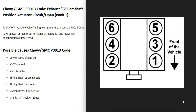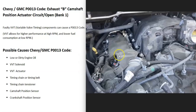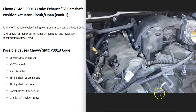If you have a V6 or V8 engine, you need to find bank one. Bank one is always the side of the engine with the number one cylinder. The opposite side is bank two. A V6 or V8 engine will have four solenoids — two on each side — and you just find bank one. The exhaust solenoid is going to be the one on the outside.